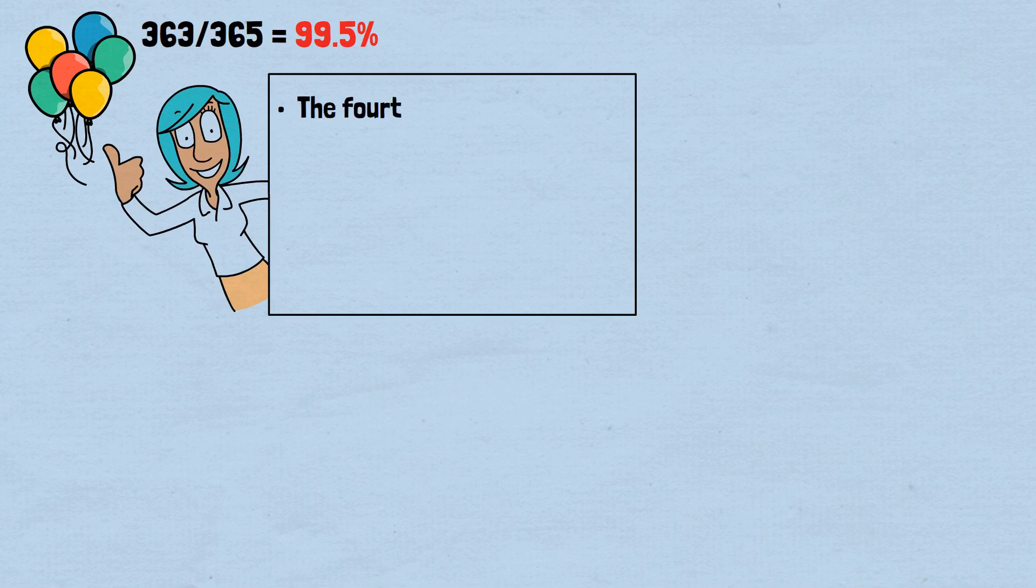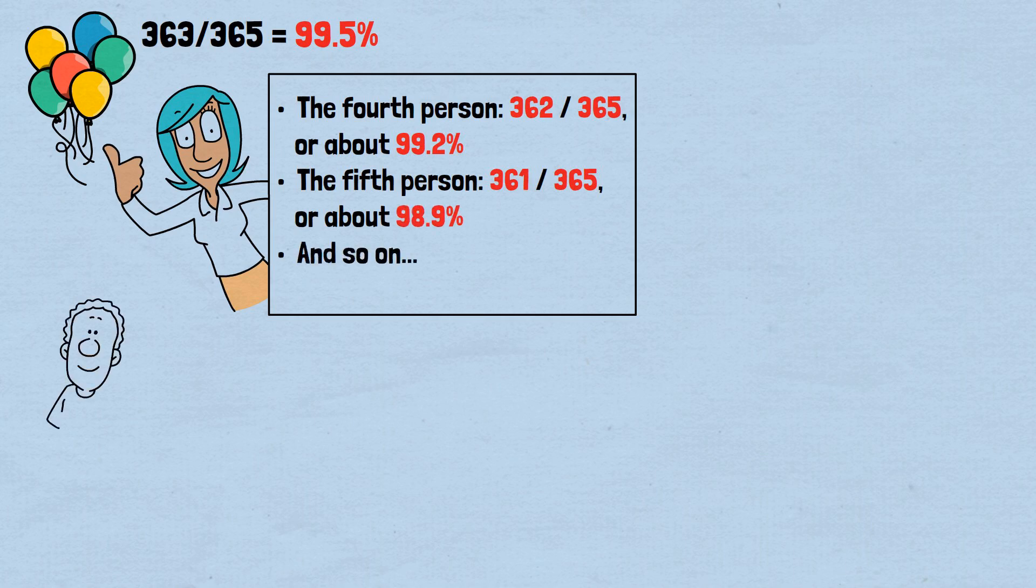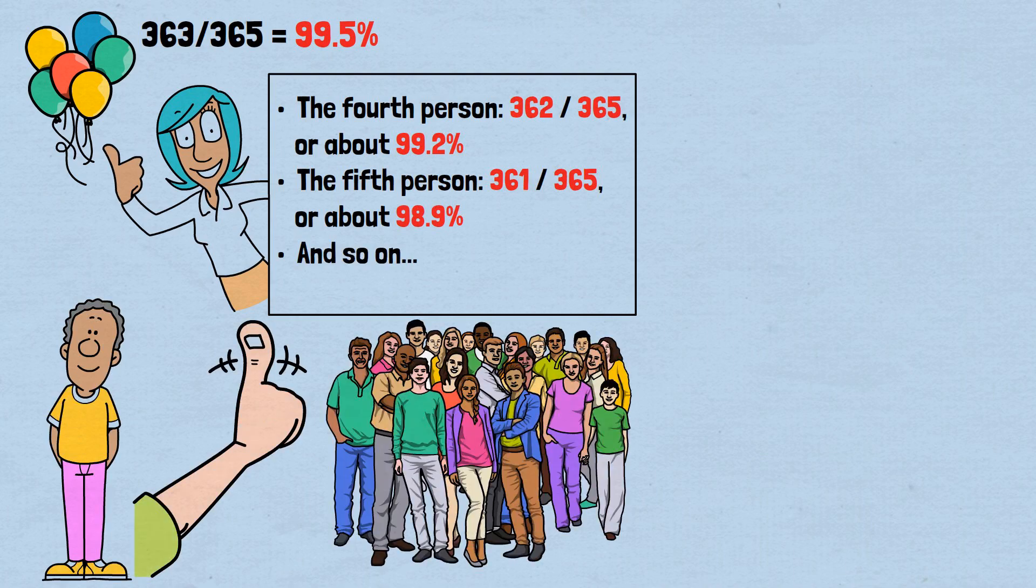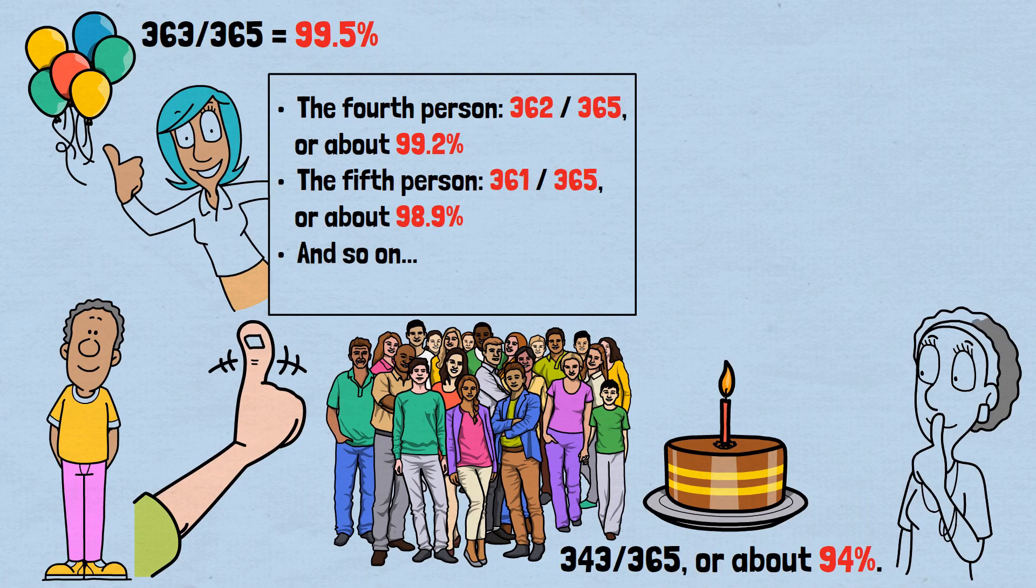The fourth person, 362 divided by 365, or about 99.2%. The fifth person, 361 divided by 365, or about 98.9%, and so on. By the time we get to the 23rd person, they need to avoid 22 already taken birthdays. Their probability is 343 divided by 365, or about 94%. To find the probability that all 23 people have different birthdays, we multiply all these individual probabilities together.